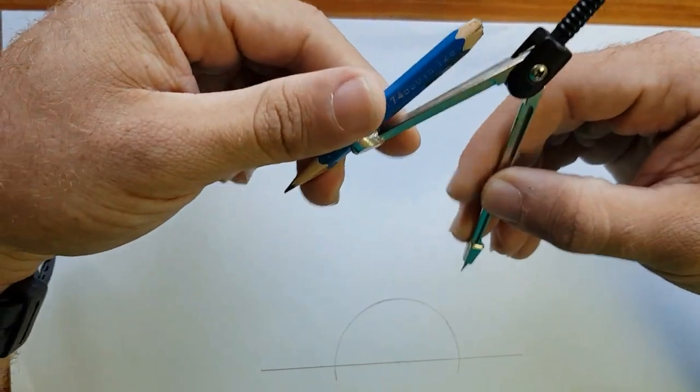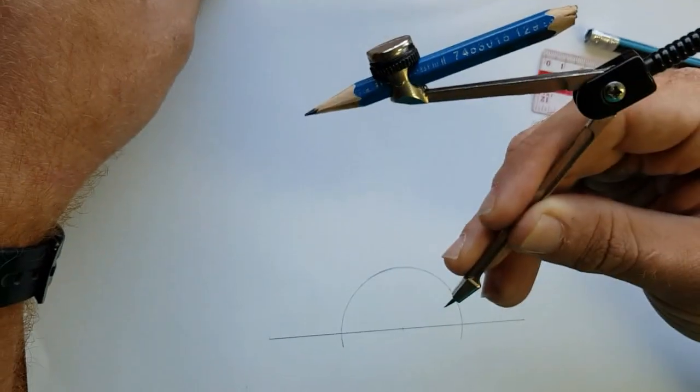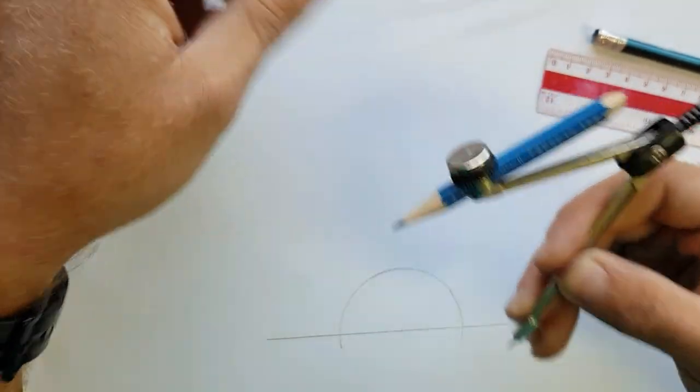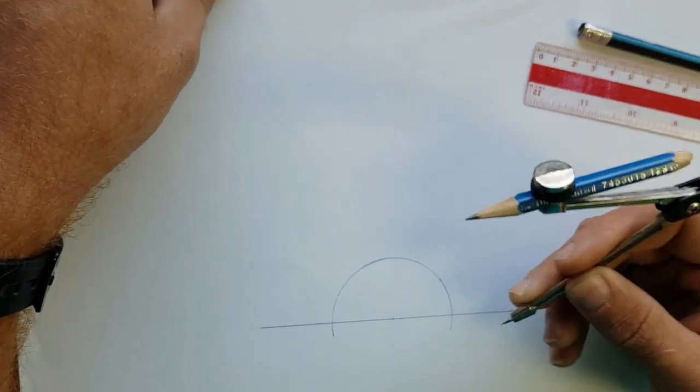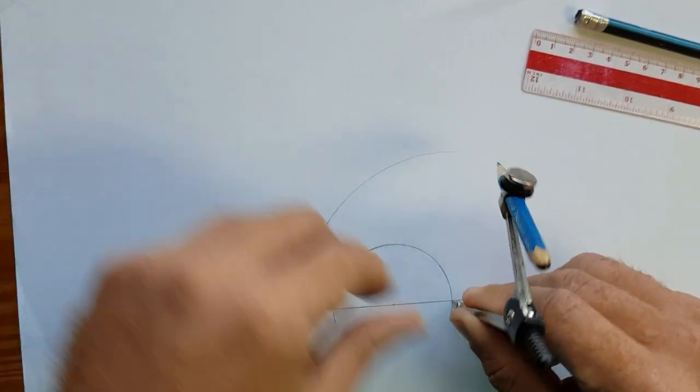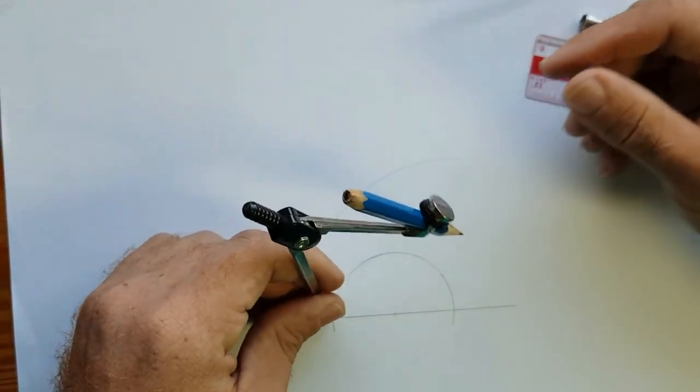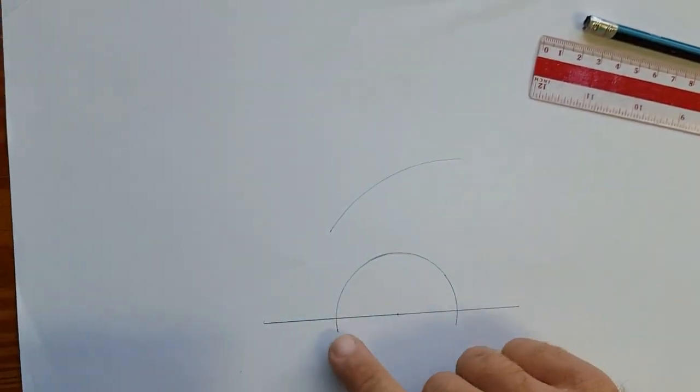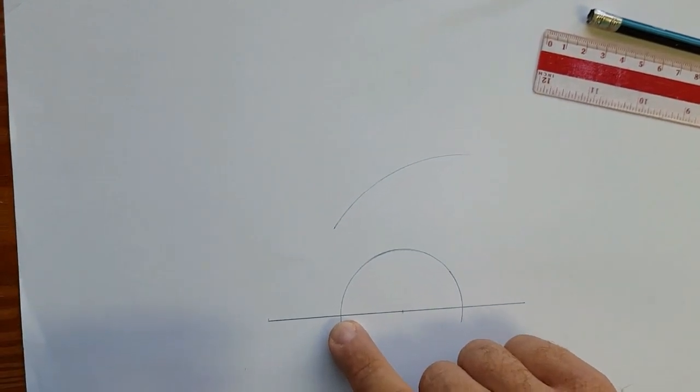We now open our compass to a wider radius, wider than the first radius that you used to construct this semicircle. We describe two arcs at either ends of where the semicircle cuts our baseline.